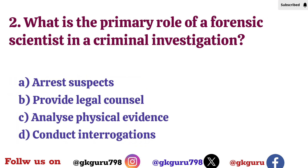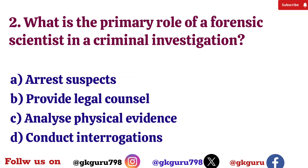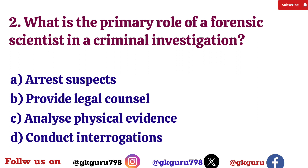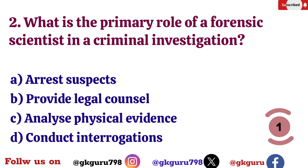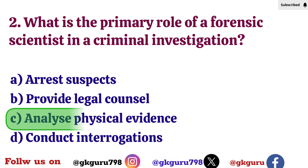Question number 2: What is the primary role of a forensic scientist in a criminal investigation? Option A: Arrest suspects. Option B: Provide legal counsel. Option C: Analyze physical evidence. Option D: Conduct interrogations. Correct answer: Option C — Analyze physical evidence.